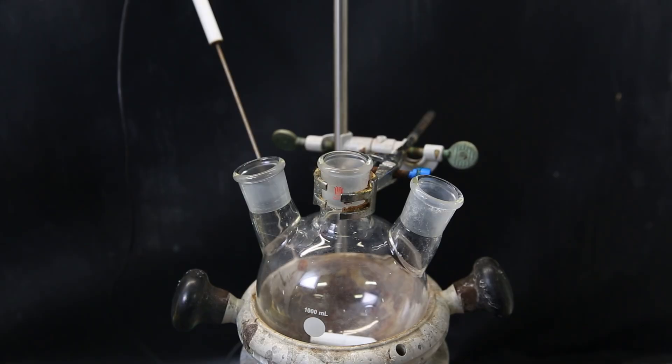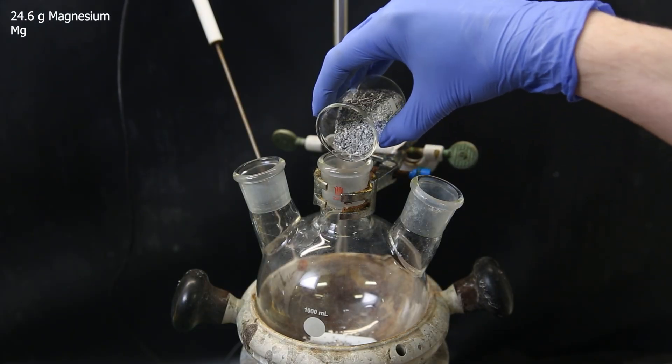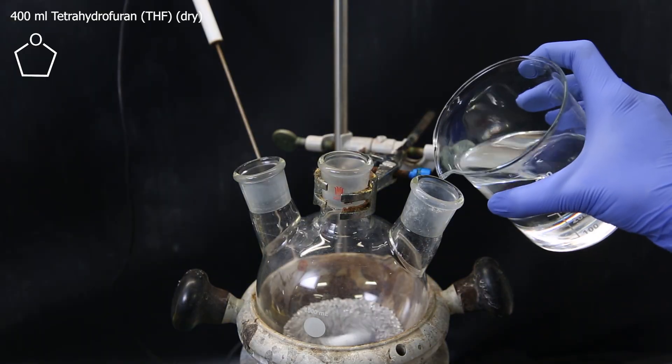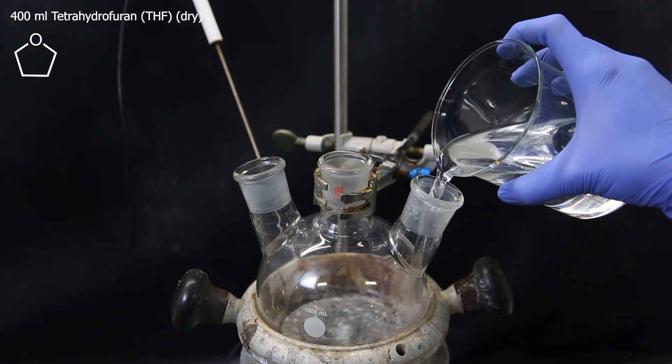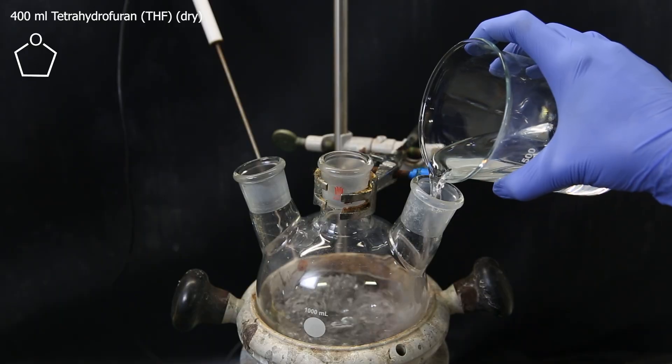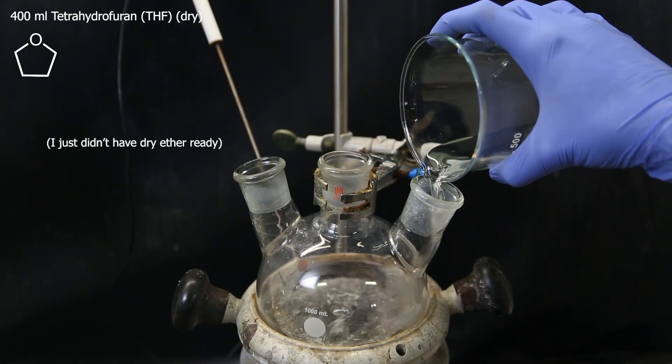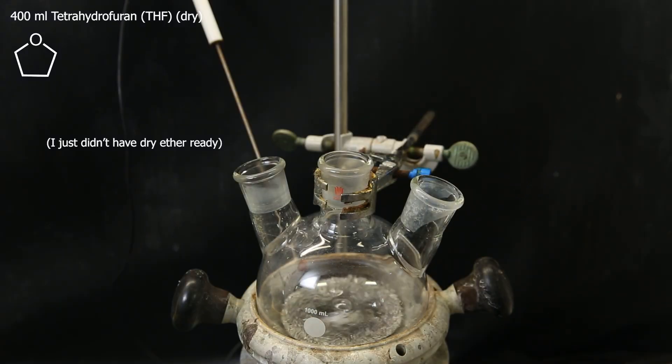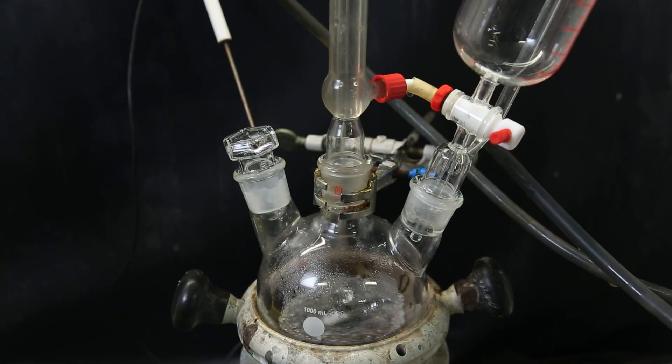Now it is time to prepare a Grignard reagent, so I have set up a large three-neck flask with a stir bar, and add in 24.6 grams of magnesium flakes. I then cover this in 400 mls of the solvent tetrahydrofuran, which I dried with molecular sieves. Diethyl ether can of course also be used. I already started heating the mixture to a reflux, and I attached a stopper, condenser, and a dropping funnel.